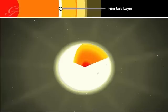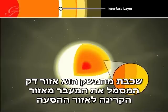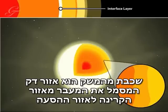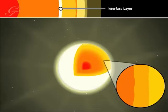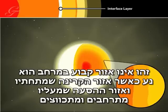The interface layer is a relatively thin layer that marks the transition from the radiative zone to the convective zone. It is not a hard, well-defined layer, but moves constantly as the radiative zone below and convective layer above swell and shrink.